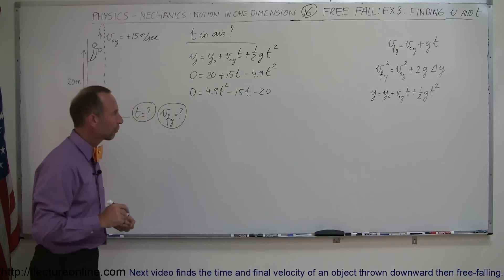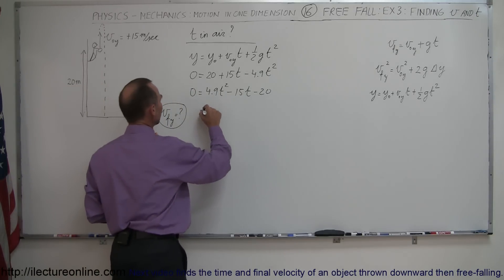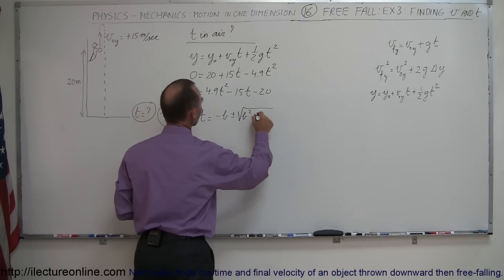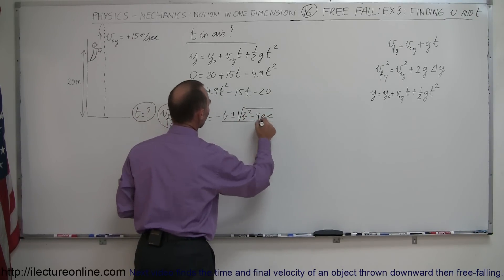Now we'll go ahead and solve that equation for t. So t is equal to minus b plus or minus the square root of b squared minus 4ac all divided by 2a.